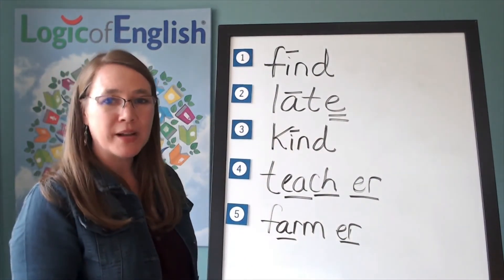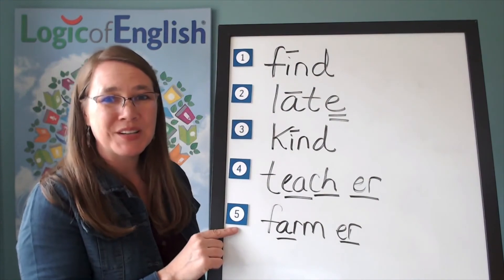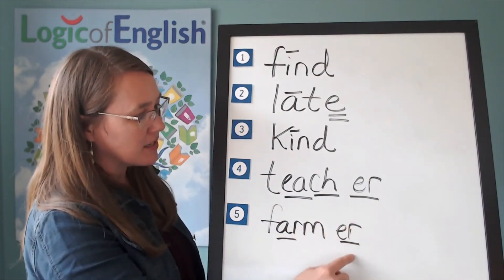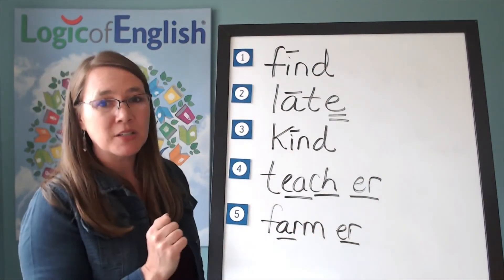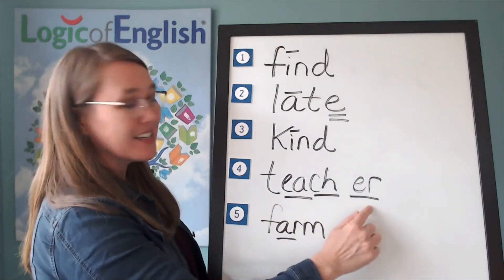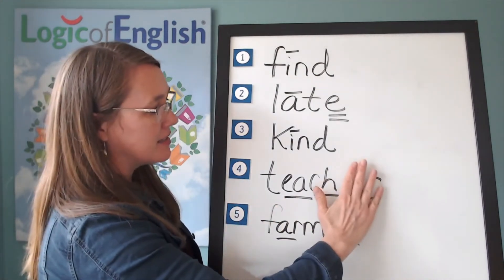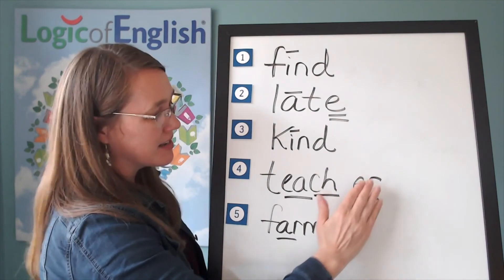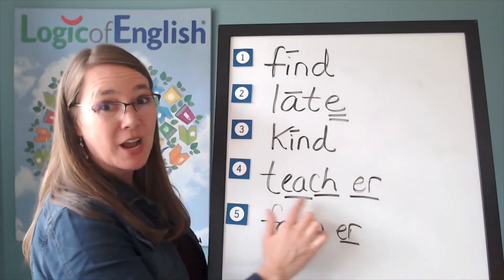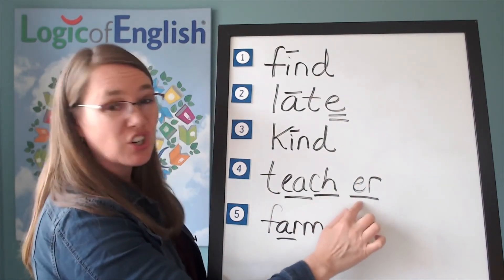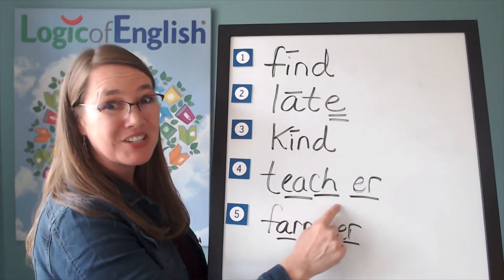Well, I have a question. Do you notice a pattern with these two words? You're right. They both end in ur. Let's look at them a little closer. What does a teacher do? A teacher teaches. You're right. So you can see how this added the ur because it's a person who teaches.